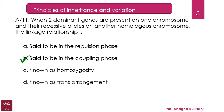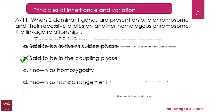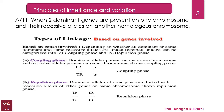For example, both dominant genes — capital T and capital R — are on one chromosome, and both recessive genes — small t and small r — are on the other chromosome. In repulsion, on one homologous chromosome there is one dominant and one recessive combination.